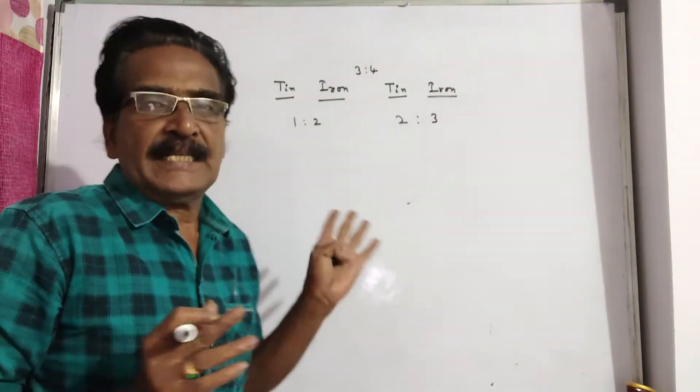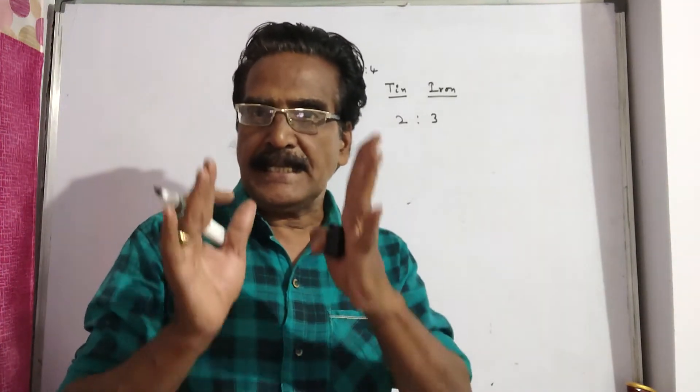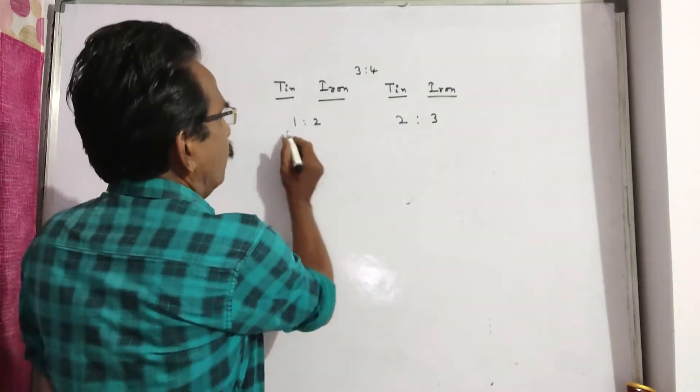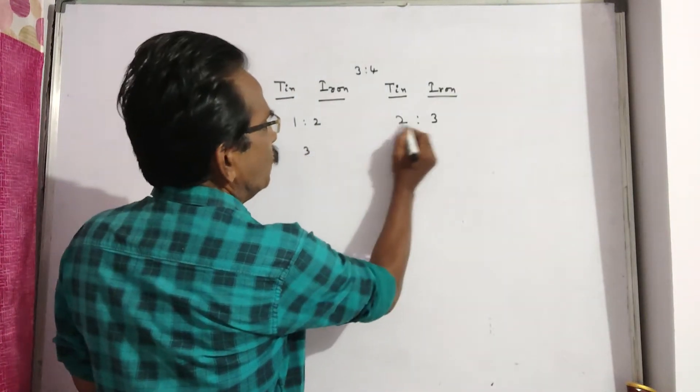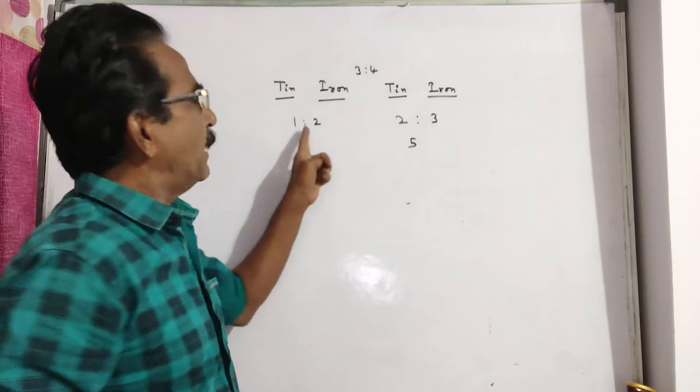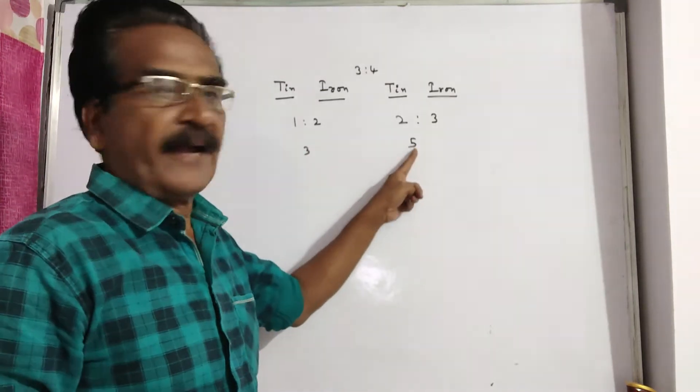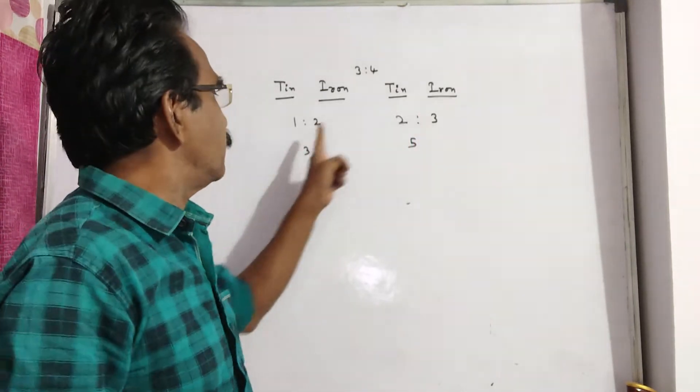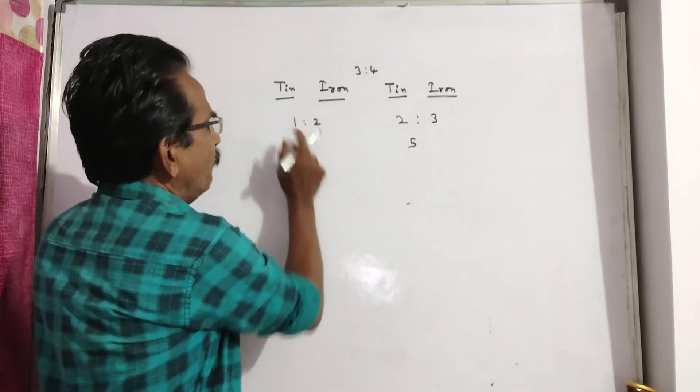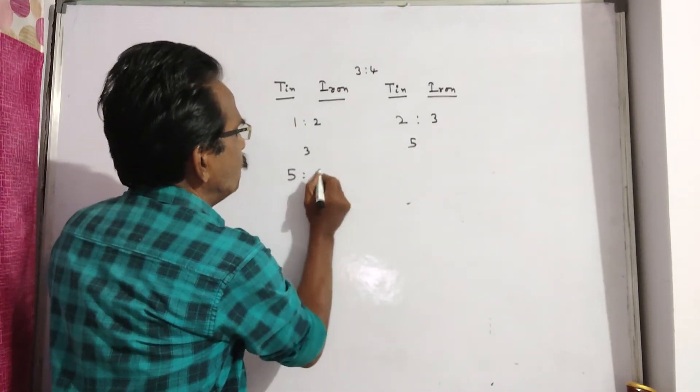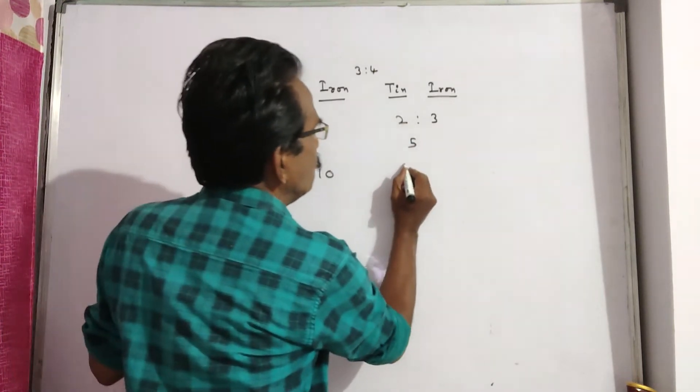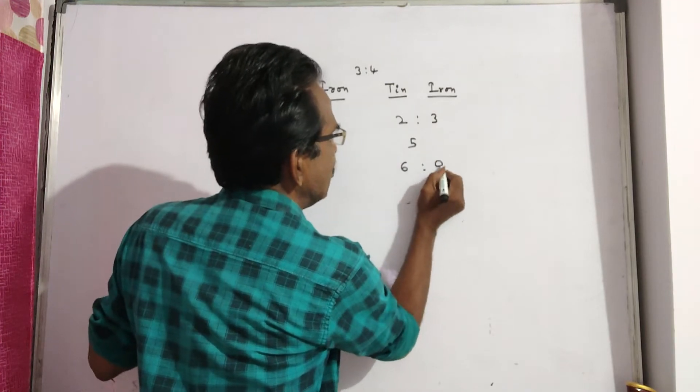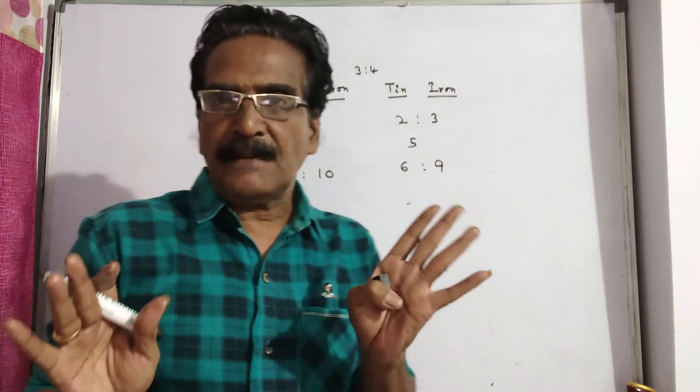Okay friends, first let us make the quantities equal. 1 plus 2 is 3. 2 plus 3 is 5. Multiply this ratio by 5. Multiply this ratio by 3. 5 times 1 is 5, 5 times 2 is 10, 3 times 2 is 6, 3 times 3 is 9. Now the quantities are made equal.